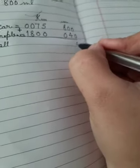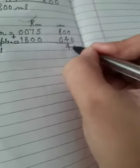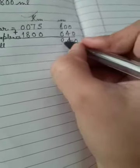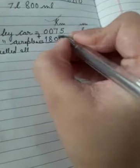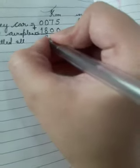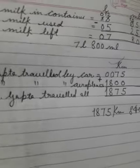We will put the sign of addition and simply add. Zero plus zero is zero, zero plus four is four, eight plus zero is eight, five plus zero is five, seven plus zero is seven, eight plus zero is eight, one plus zero is one. Total distance traveled is 1875 kilometer and 840 meter. He traveled this distance by car and aeroplane.